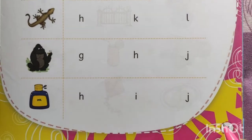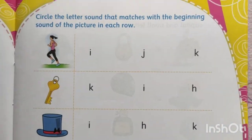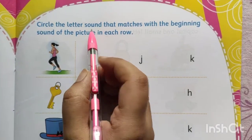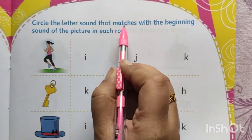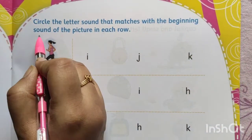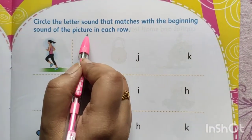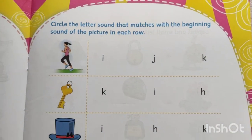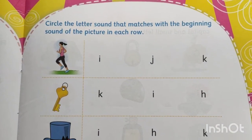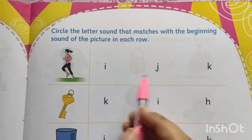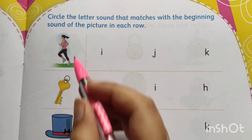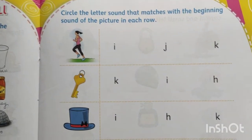Next page, page number 25. The instruction says: circle the letter sound that matches with the beginning sound of the picture in each row. So you have to circle the letter which is matched with the picture.